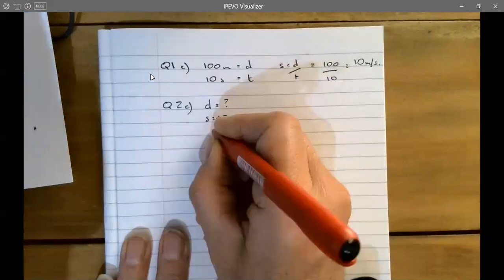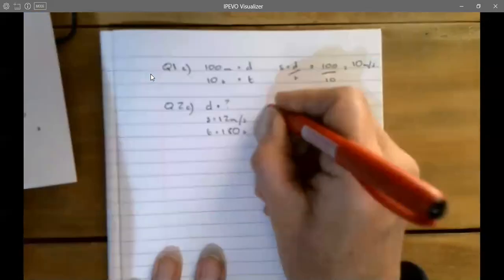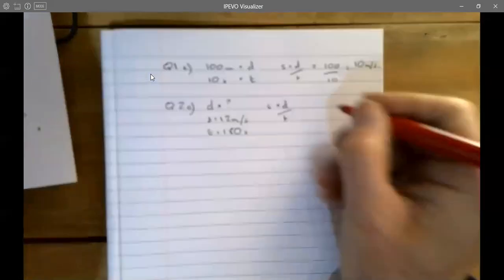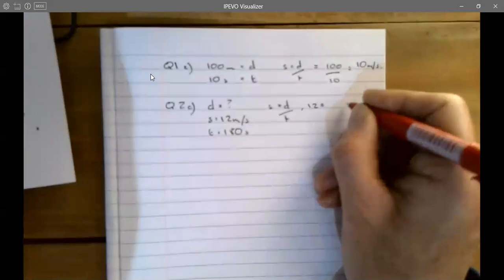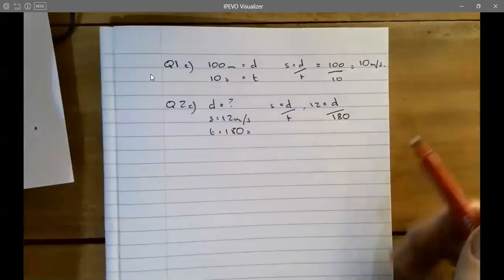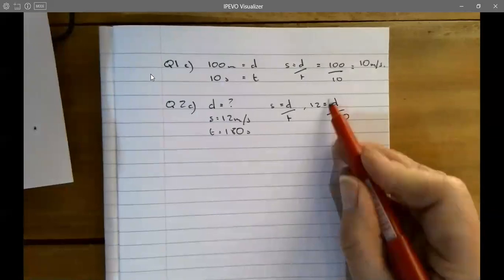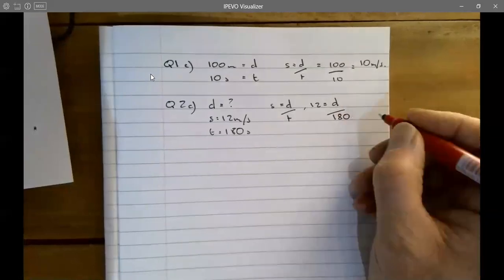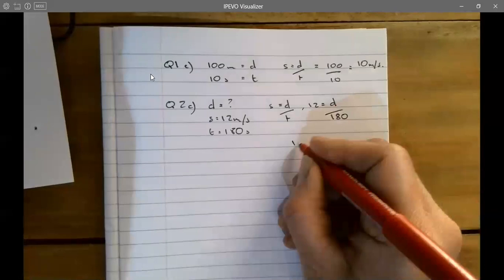The time is 180 seconds. My equation is speed equals distance over time. I'm going to insert: 12 is equal to distance over 180. I want to make distance the subject, so if I times both sides by 180, it will cancel on the right-hand side. 12 is equal to d over 180.